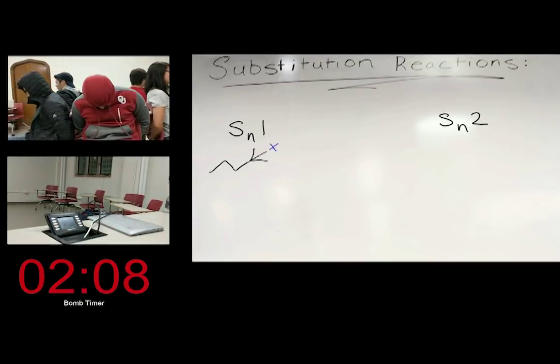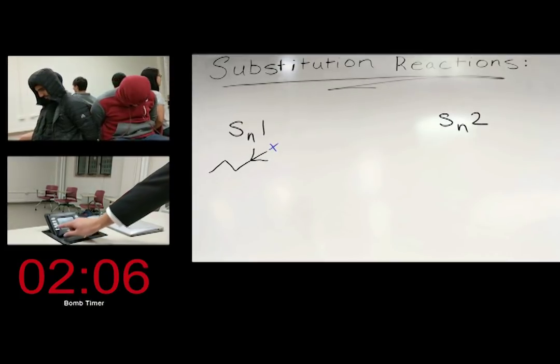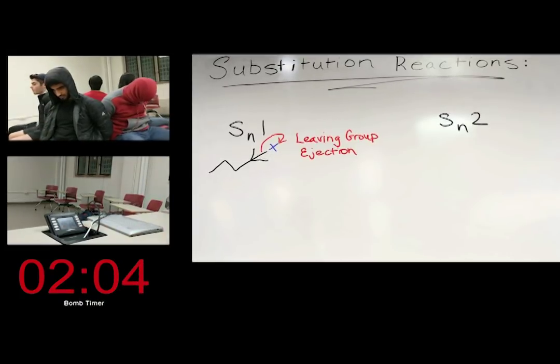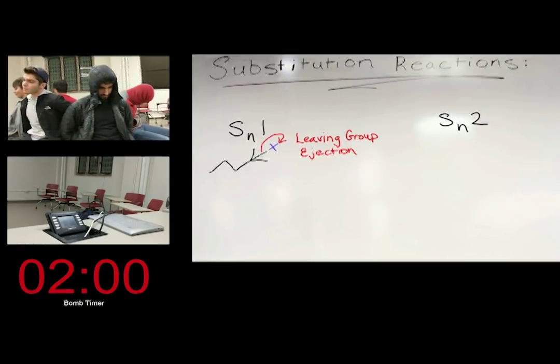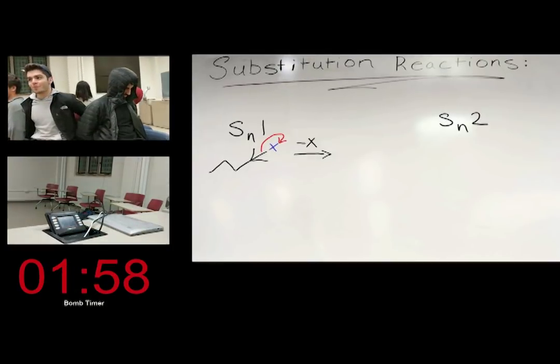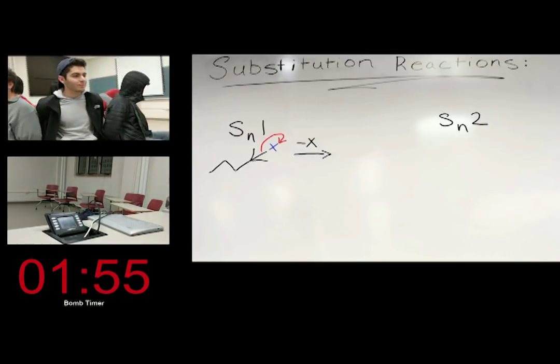In an SN1 reaction with an alkyl halide, the halogen leaves the molecule, acting as a leaving group and taking a pair of electrons with it. This step in the reaction is independent of the nucleophile, and is thus called unimolecular. Oh, okay.